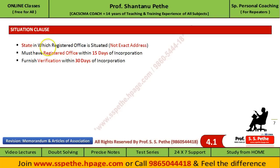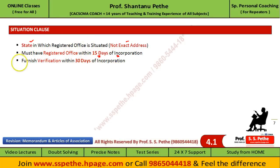Now let's see the situation clause. In the situation clause, you have to mention the state in which the registered office of the company is situated; you need not give the exact address. Every company must have its registered office within 15 days of its incorporation. As per the new Companies Act, the company should also furnish verification of its address within 30 days of its incorporation.